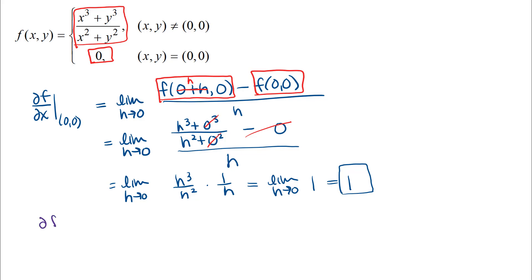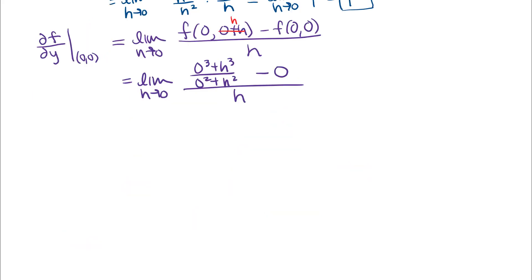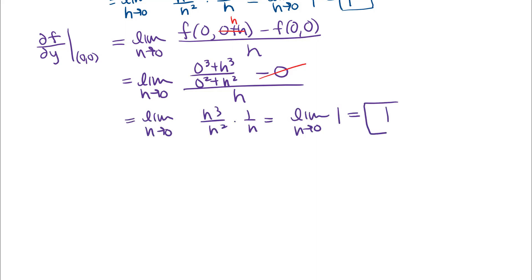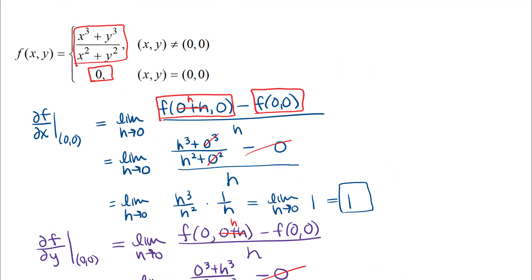From the definition, the partial derivative of f with respect to y at the point (0, 0) is the limit as h approaches 0 of f(0, 0 + h) minus f(0, 0), all over h. This time I add h to the y coordinate. I plug in the point (0, h) into the first piece of the piecewise defined function, and f(0, 0) is just 0. Simplifying and finishing the limit gives me 1 as well. So for this particular function, both partial derivatives are 1, computed using the limit definition — which is necessary because of the piecewise definition.